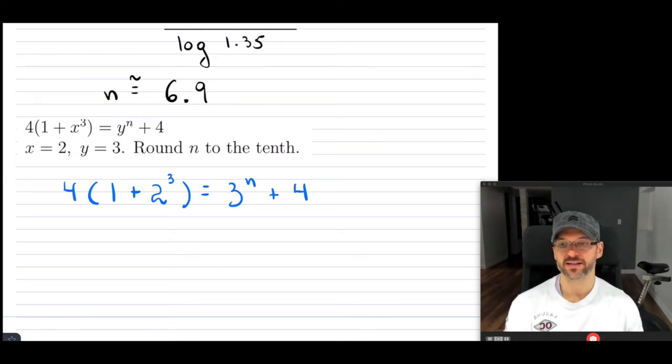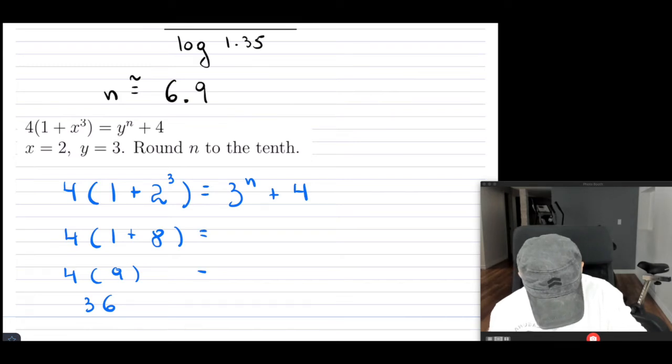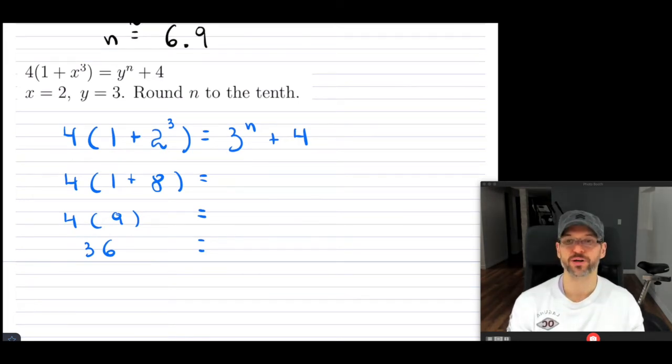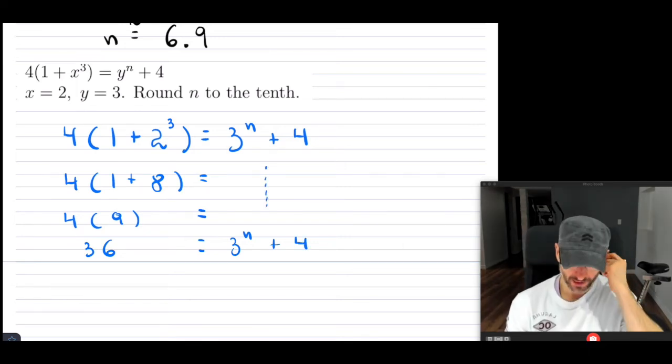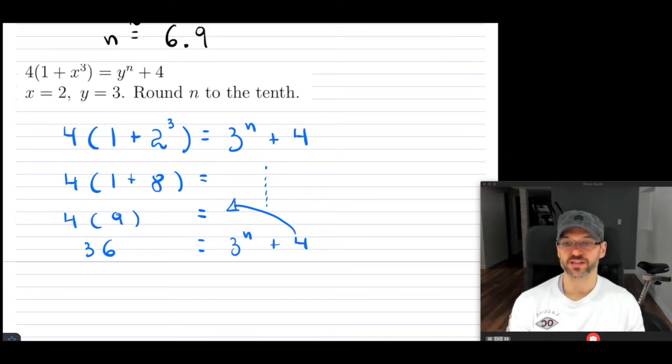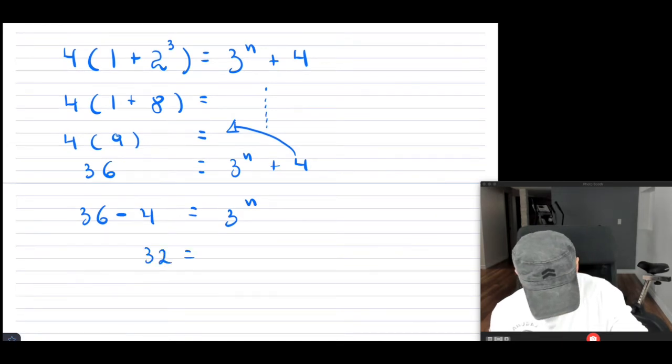Now, the left-hand side is actually all numbers. I know everything there. So this is going to be 4. This is 1 plus the exponent. This is 8. So 2 cubed is 8. So that's going to be 4. This is 9. So this is 36. So that's what I have there. On the right-hand side, so notice I have 3n plus 4. So I have 3n plus 4. So I'm going to bring the 4 over to the opposite side because I just want the base with the exponent. So that's going to be 36 minus 4 equals to 3n. So that's 32 equals to 3n.